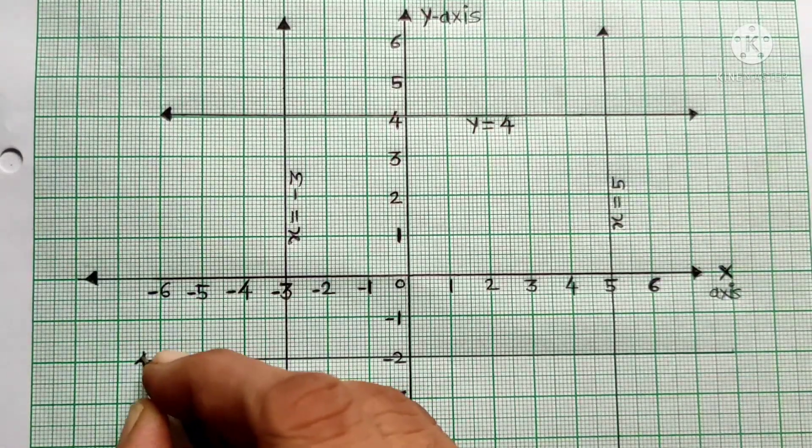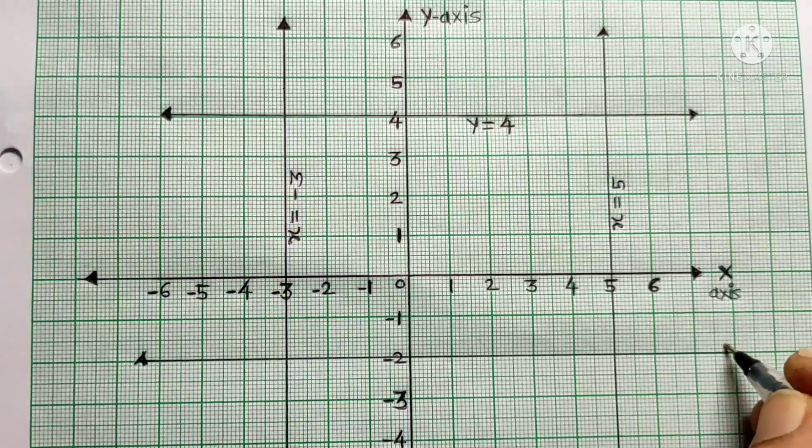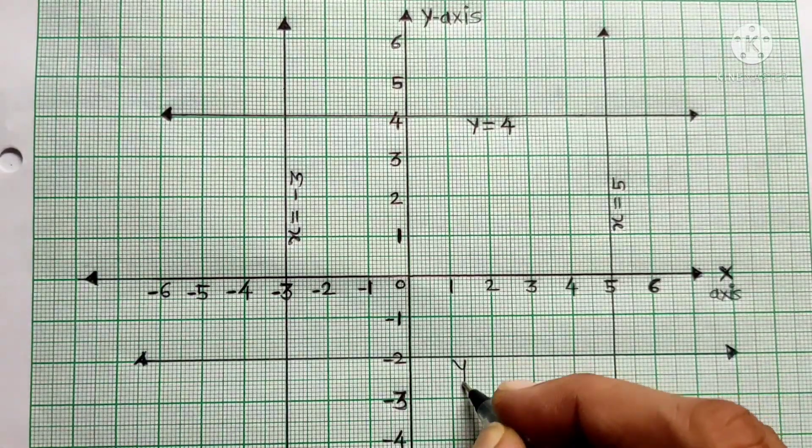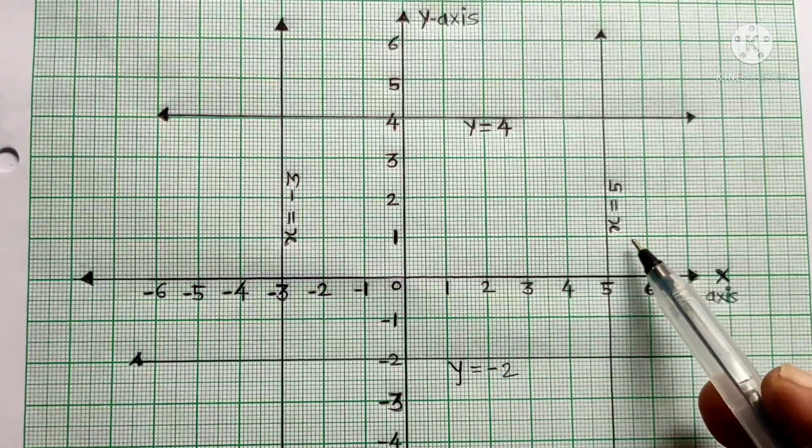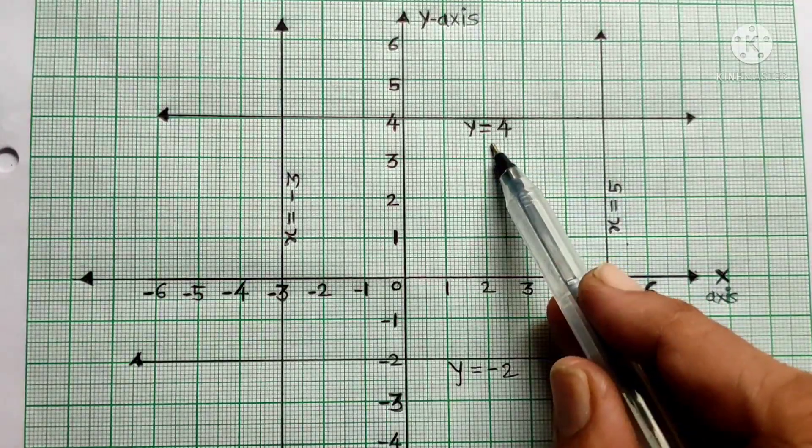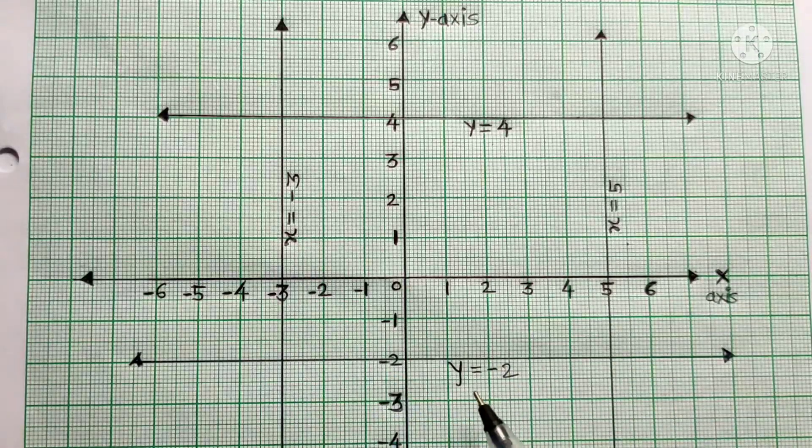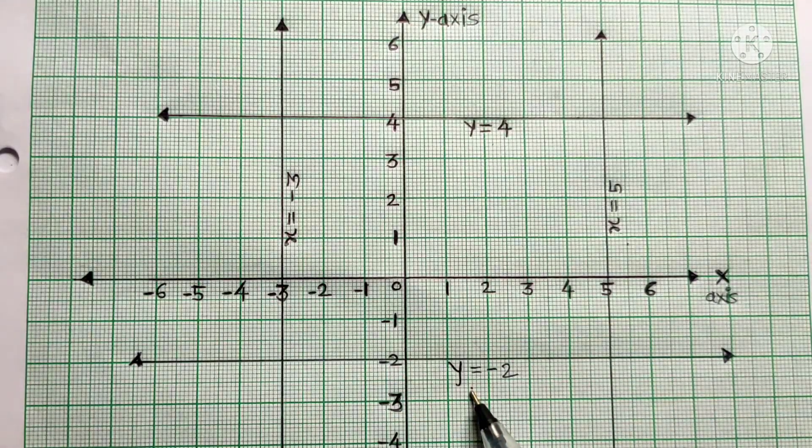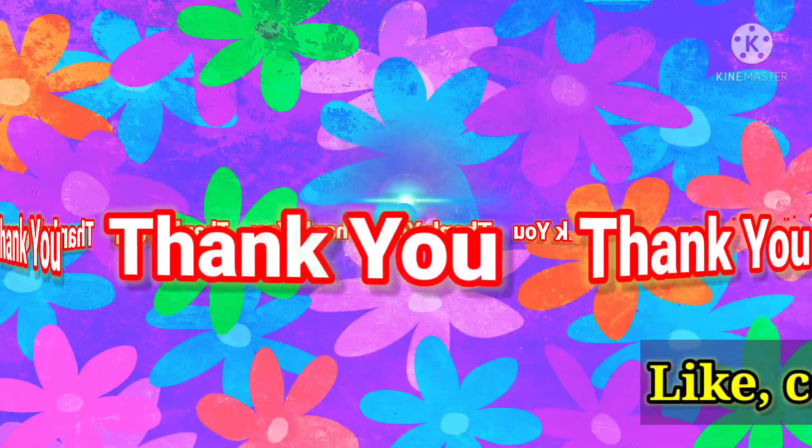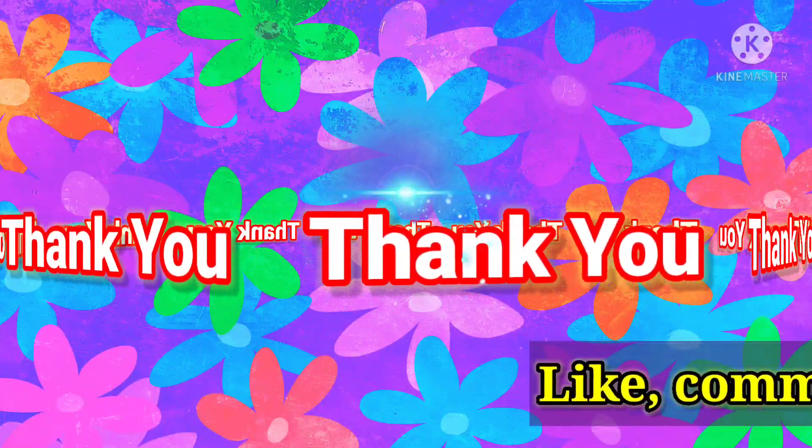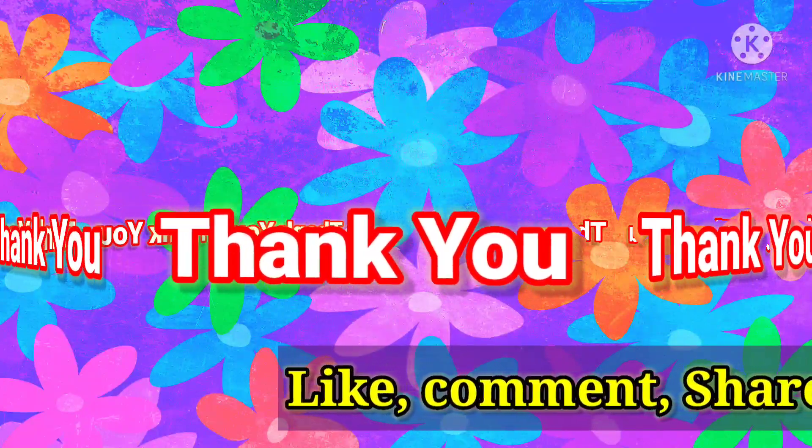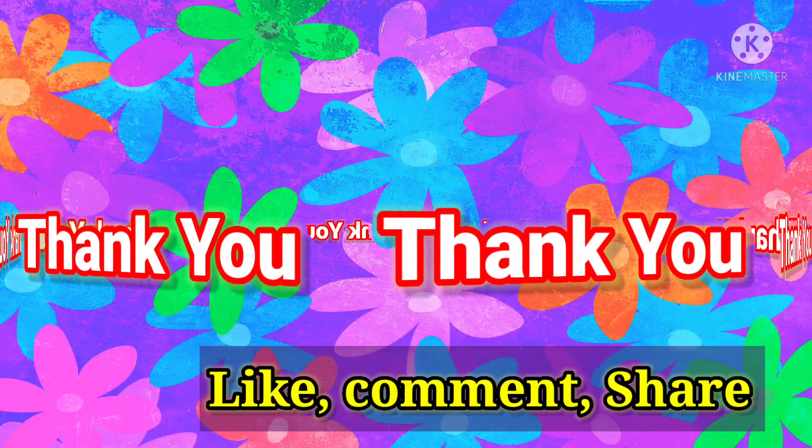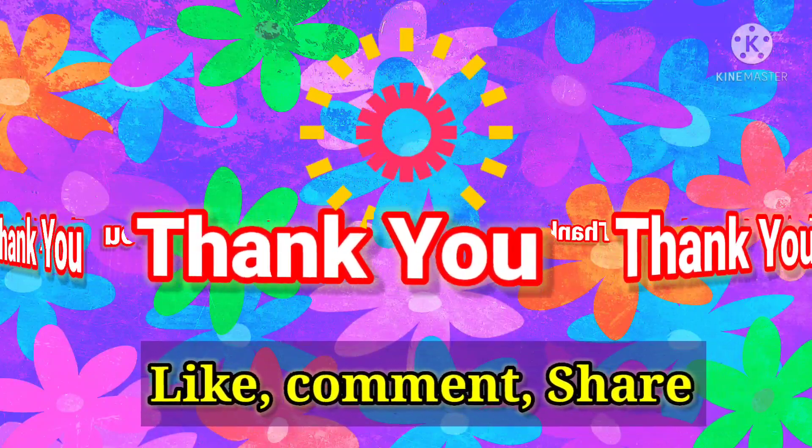We draw arrows on the lines. Look at all four lines: x equals 5, y equals 4, x equals minus 3, and y is equal to minus 2. Thank you friends. If you liked the video, please like, comment, and share with your friends. Subscribe to my channel. Thank you again.